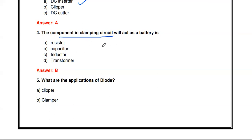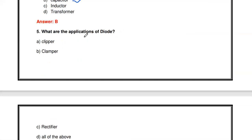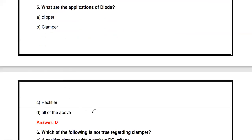Next question: The component in a clamping circuit that acts as a battery is what? To construct a clamper circuit, three basic components are needed: a resistor, a capacitor, and a diode. Among these, the capacitor acts as a battery because it stores the previous charge value.